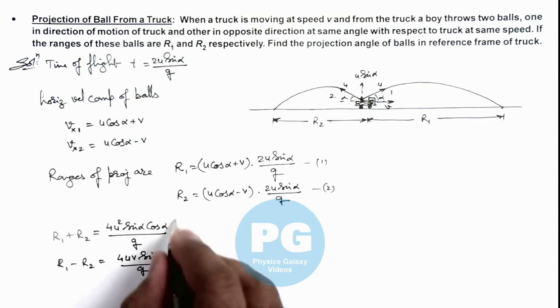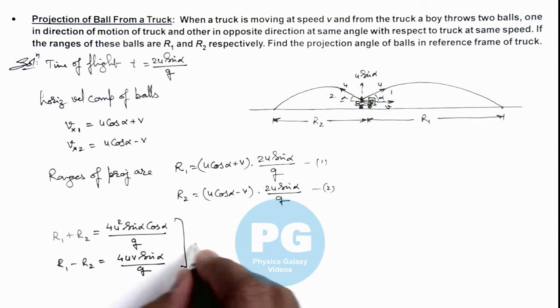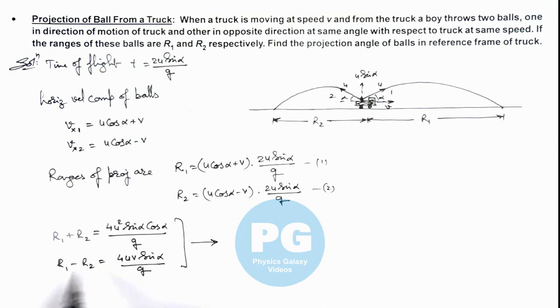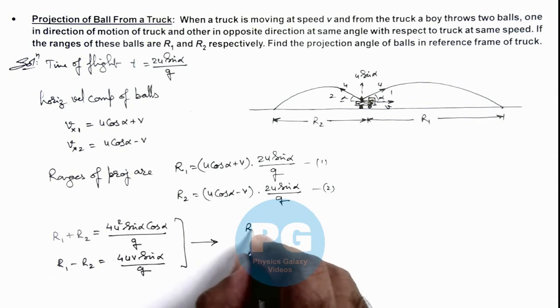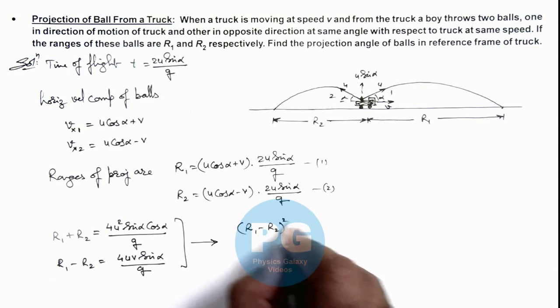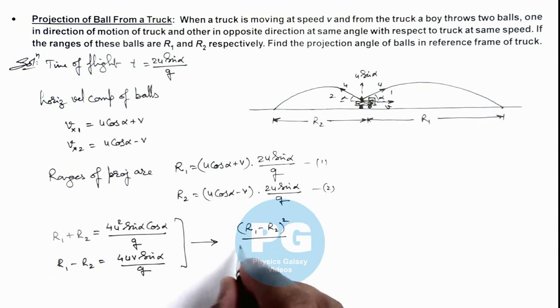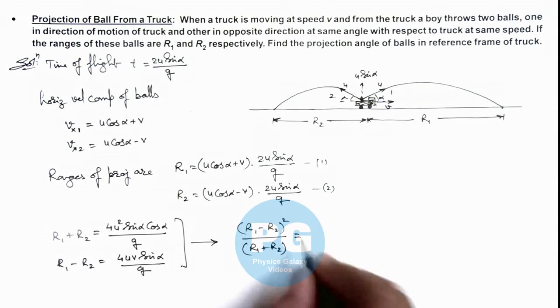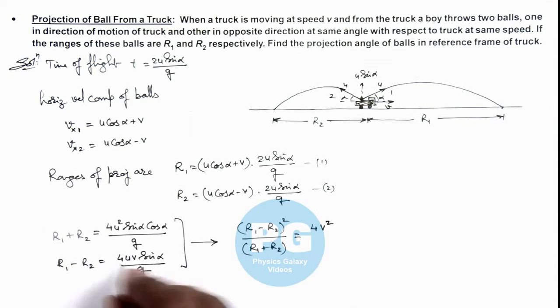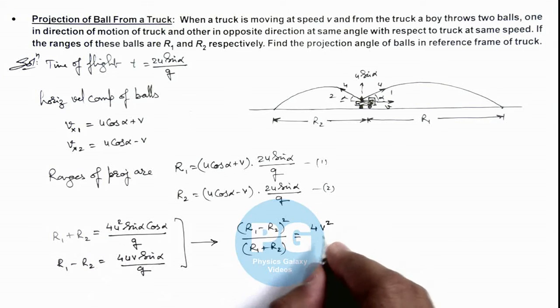And from these two equations, here you can see we square this term and take the ratio. This gives us r1 minus r2 whole square divided by r1 plus r2. So this result is giving us, u squared gets cancelled out, 4v squared by g tan alpha.